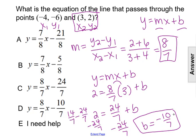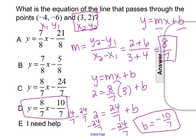So with that slope value and that value of b, we end up with the equation y equals 8 over 7x minus 10 over 7, which makes our answer choice D.